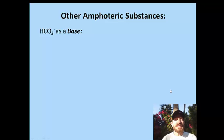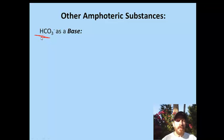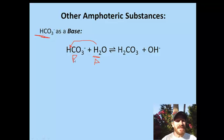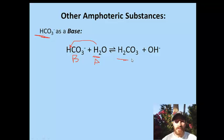What are some other amphoteric substances besides water? A common one is bicarbonate. You can get it by putting sodium bicarbonate into water — sodium dissolves, leaving a bicarbonate solution. Bicarbonate is also found in our blood. When bicarbonate acts as a base, it accepts a proton from water. The proton goes from water to bicarbonate, making water the acid and bicarbonate the base. On the product side, you get carbonic acid — which is actually unstable and doesn't stick around very long — and a hydroxide solution.